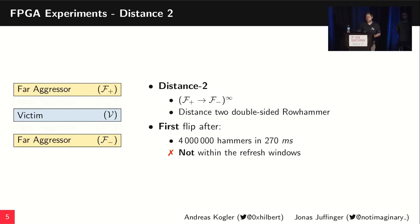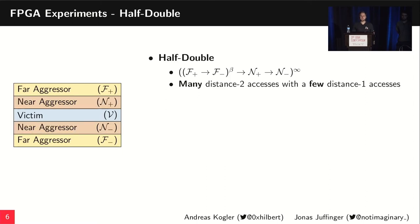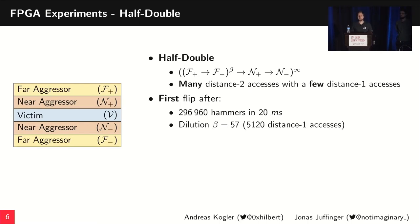Now, the effect we observed is that if we combine those two patterns, we can create the HalfDouble effect. The idea is that we use many accesses to these distance-2 far aggressors and only a few to the near aggressors. We can tune this with a parameter we call the dilution factor. When hammering with HalfDouble using this configuration, we take about 20 milliseconds until we find a flip.